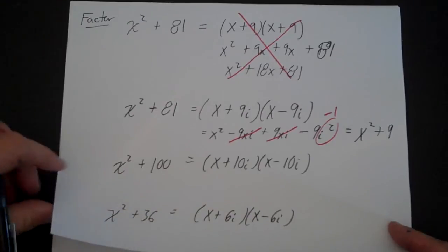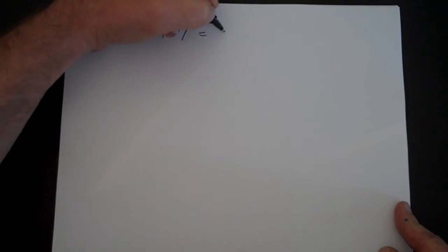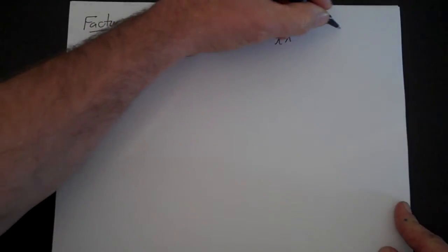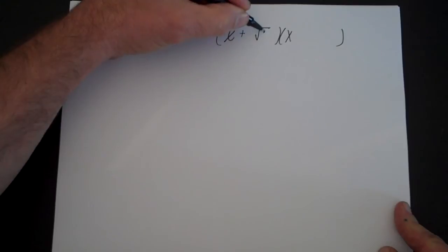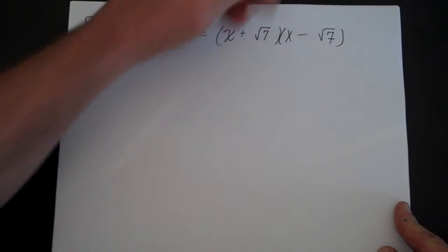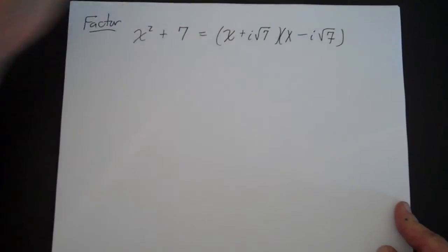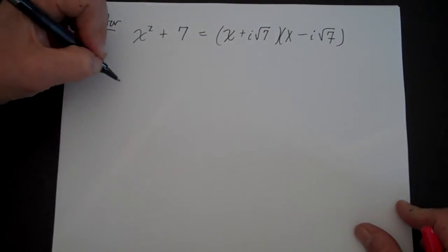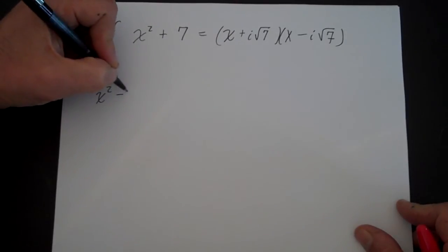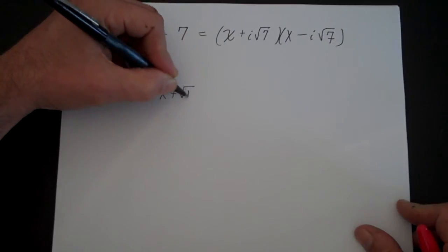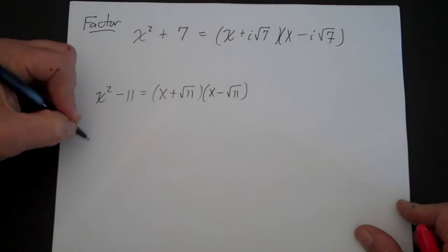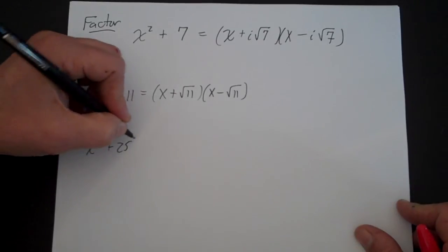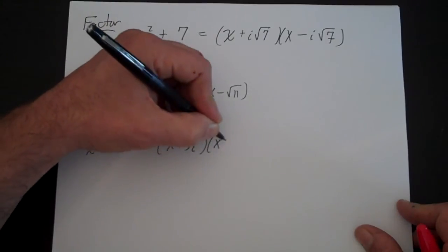So now we can factor the sum of squares. Since we can factor the sum of squares, we can also factor it when one of them is not a perfect square. For example, x squared plus 7 factors as x plus square root of 7 times x minus square root of 7, but since it's a positive you need an i in both terms. We have x squared minus 11 is x plus root 11 times x minus root 11, and x squared plus 25 is x plus 5i times x minus 5i.